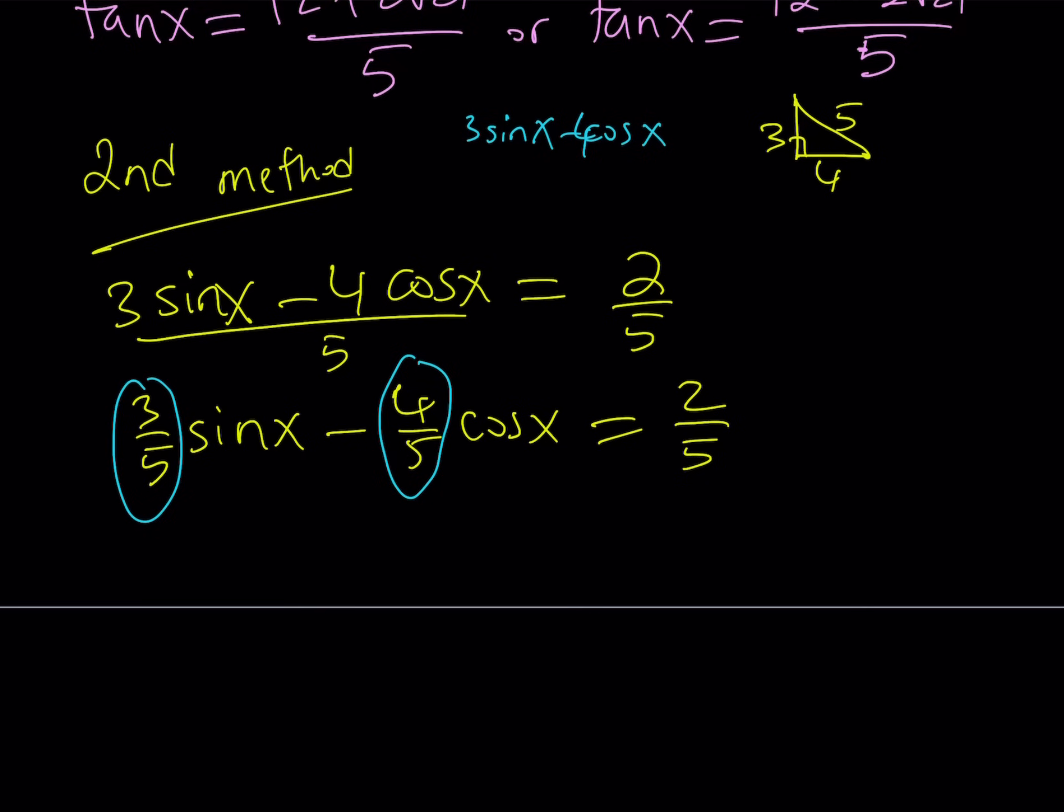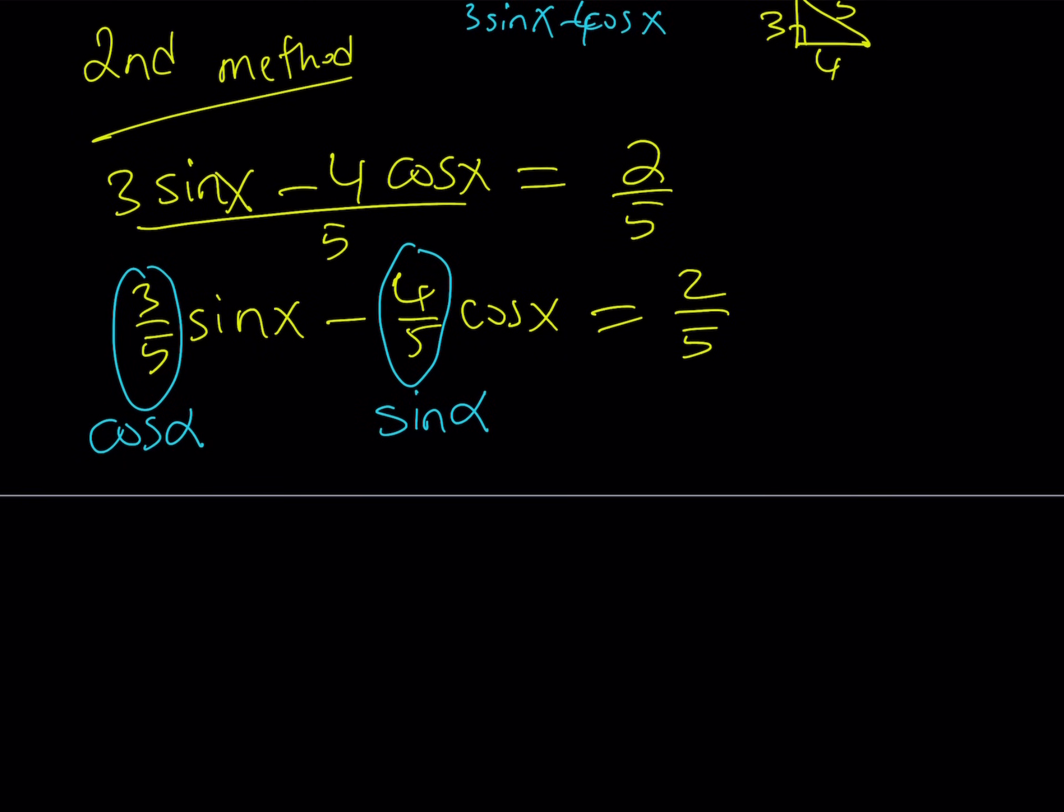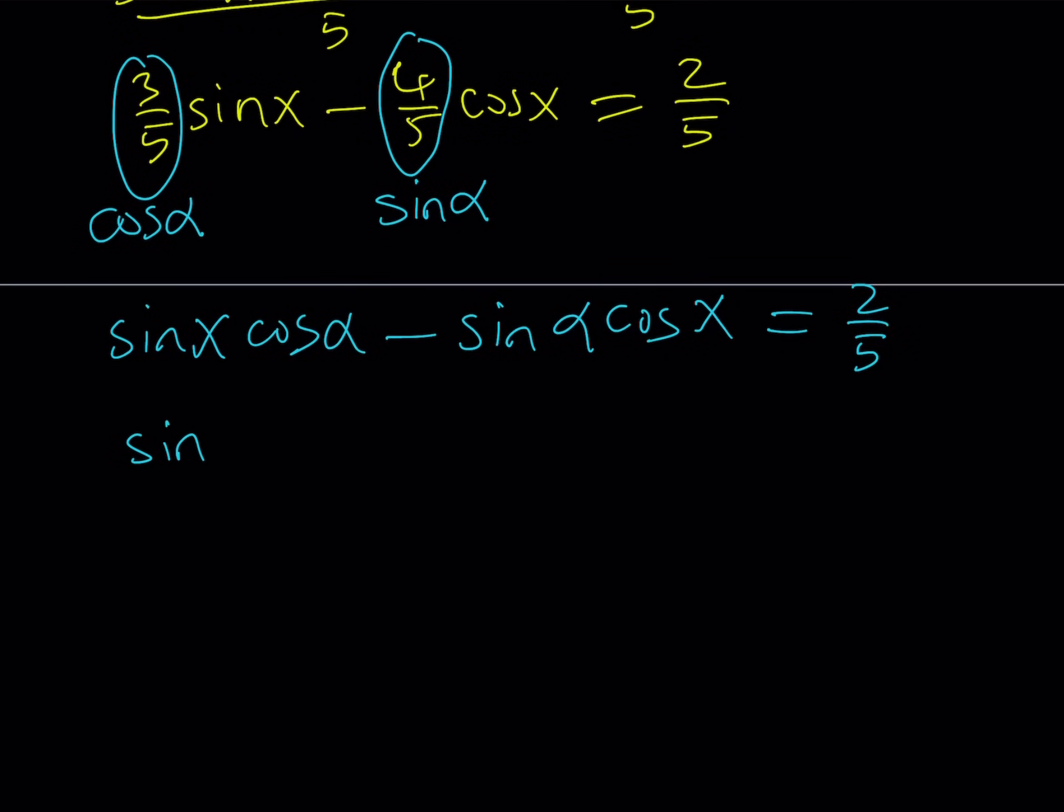And notice that they're special because of the 3, 4, 5 triangle. There are sines and cosines of the same angle. So I can just replace 3 over 5 with cosine alpha, alpha being an acute angle, by the way, because both sine and cosine are positive. And 4 over 5 is going to be the sine alpha value. So this gives us sine x cosine alpha minus sine alpha cosine x. And definitely, this is something you should be familiar with if you're dealing with trigonometry. This is equal to sine of x minus alpha equals 2 over 5.